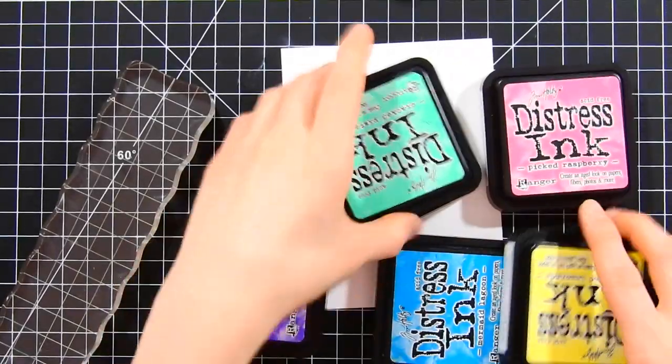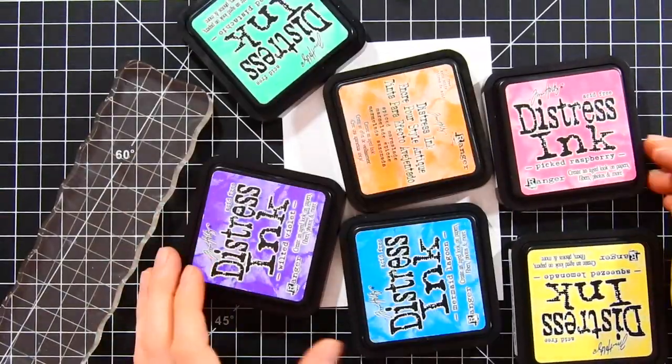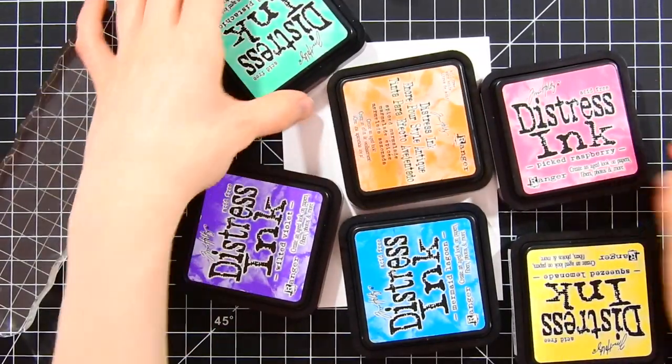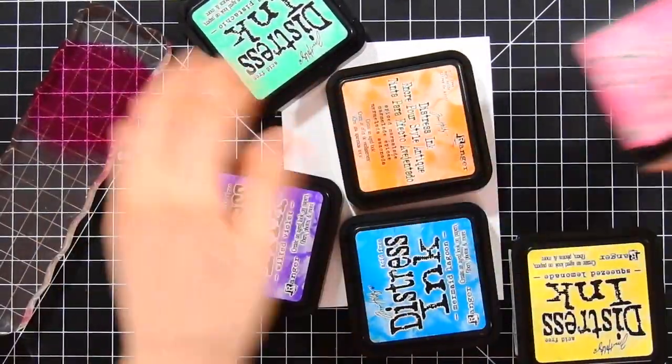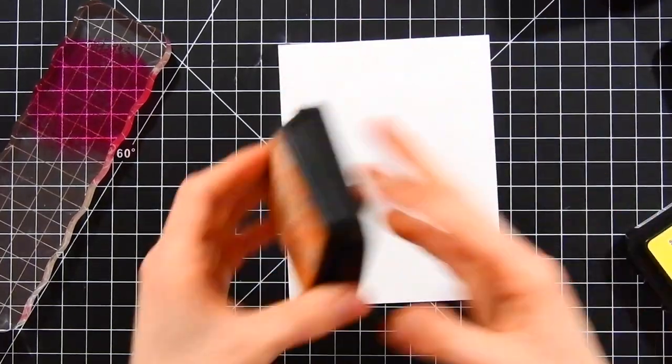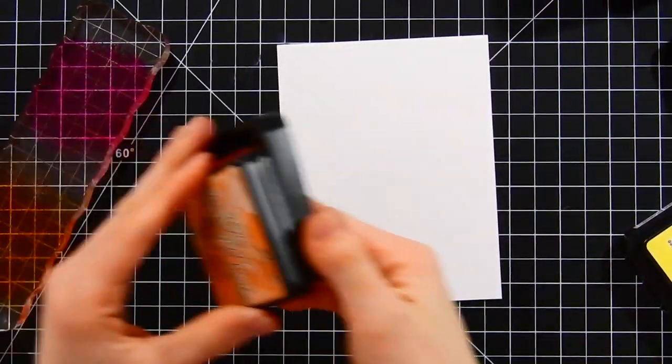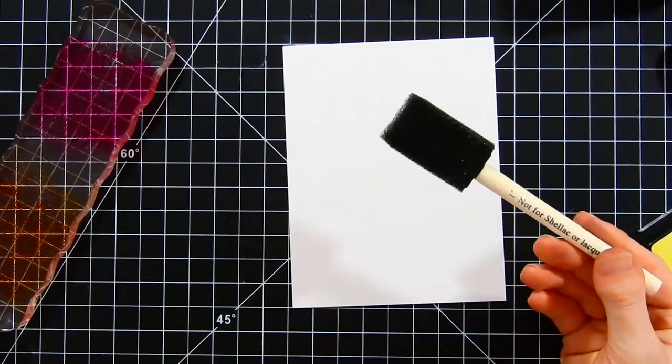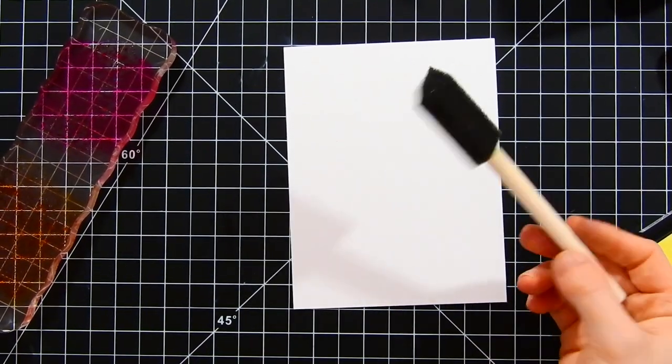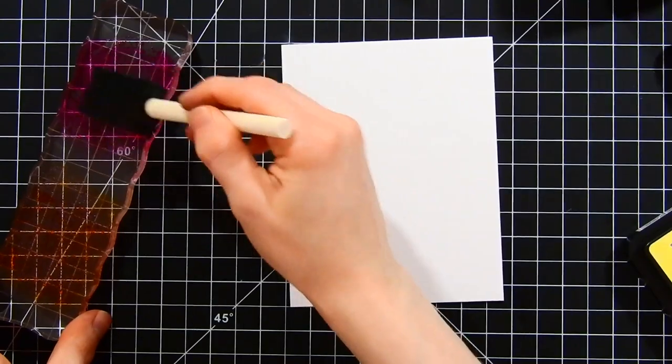To begin with, I've got my distress inks - these are Tim Holtz distress inks. I'll have all the colors listed on the side of the screen so you can easily pick them out, and I'll also have them listed in the video description and on the Simon Says Stamp blog. I'm applying them onto an acrylic block, and now I'm going to take a sponge brush, a pretty inexpensive brush you can get at almost any craft store. I'm going to be using this brush to apply my ink onto my watercolor paper.